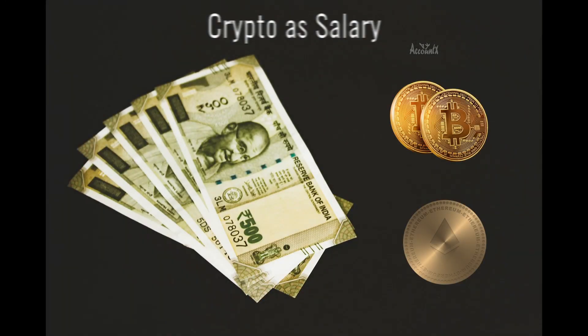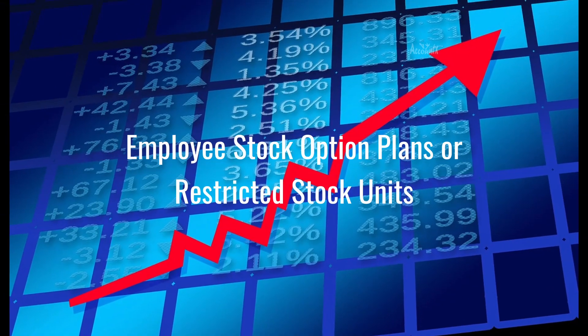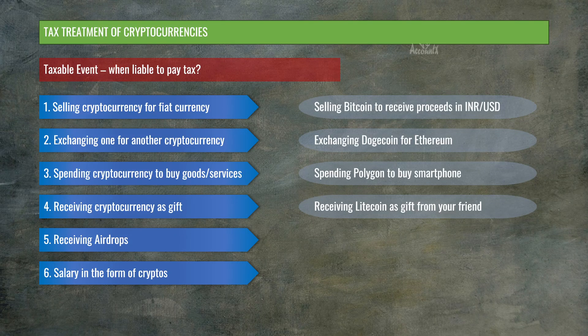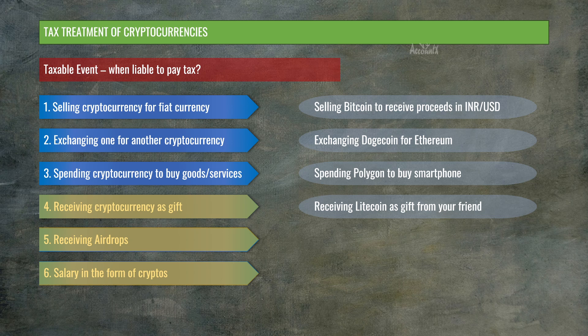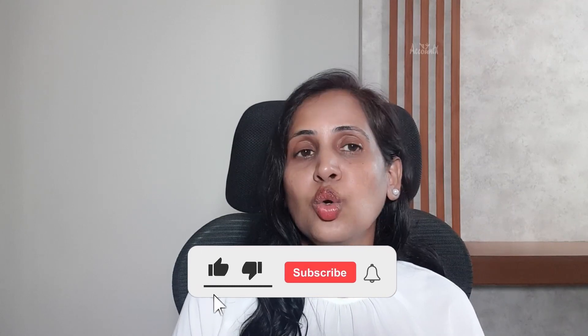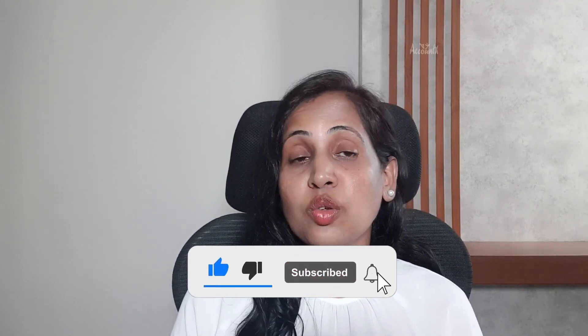The next taxable event is getting salary in the form of cryptos. Tax treatment here is very similar to ESOPs or RSUs that you get from your employer — the value of these cryptocurrencies would be taxed according to your slab and taxed as salary. When you later sell these cryptocurrencies, you pay tax at 30% on the gains, and the cost of acquisition would be the value taxed as salary. For events 4, 5, and 6, tax treatment is largely the same, except that gifts have an exemption up to Rs. 50,000 and salary allows other deductions like standard deduction.